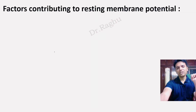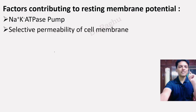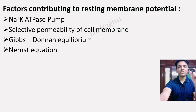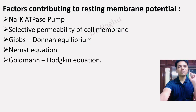What are the important factors contributing to the generation of the resting membrane potential? The first is the sodium-potassium ATPase pump. Second is the selective permeability of the cell membrane. Third is the Gibbs-Donnan equilibrium. Next we will learn the Nernst equation, and lastly there is the Goldman-Hodgkin-Katz equation.